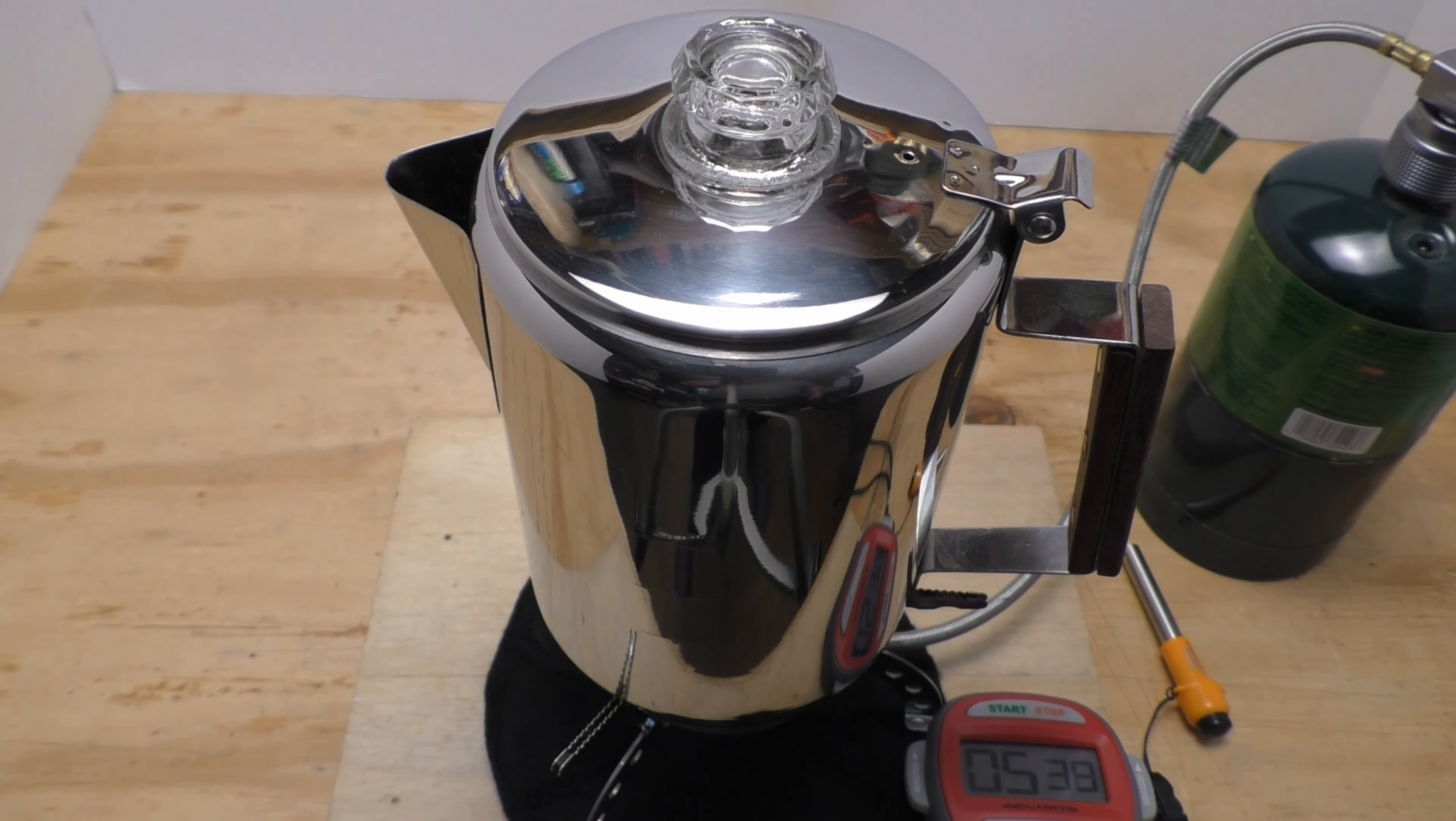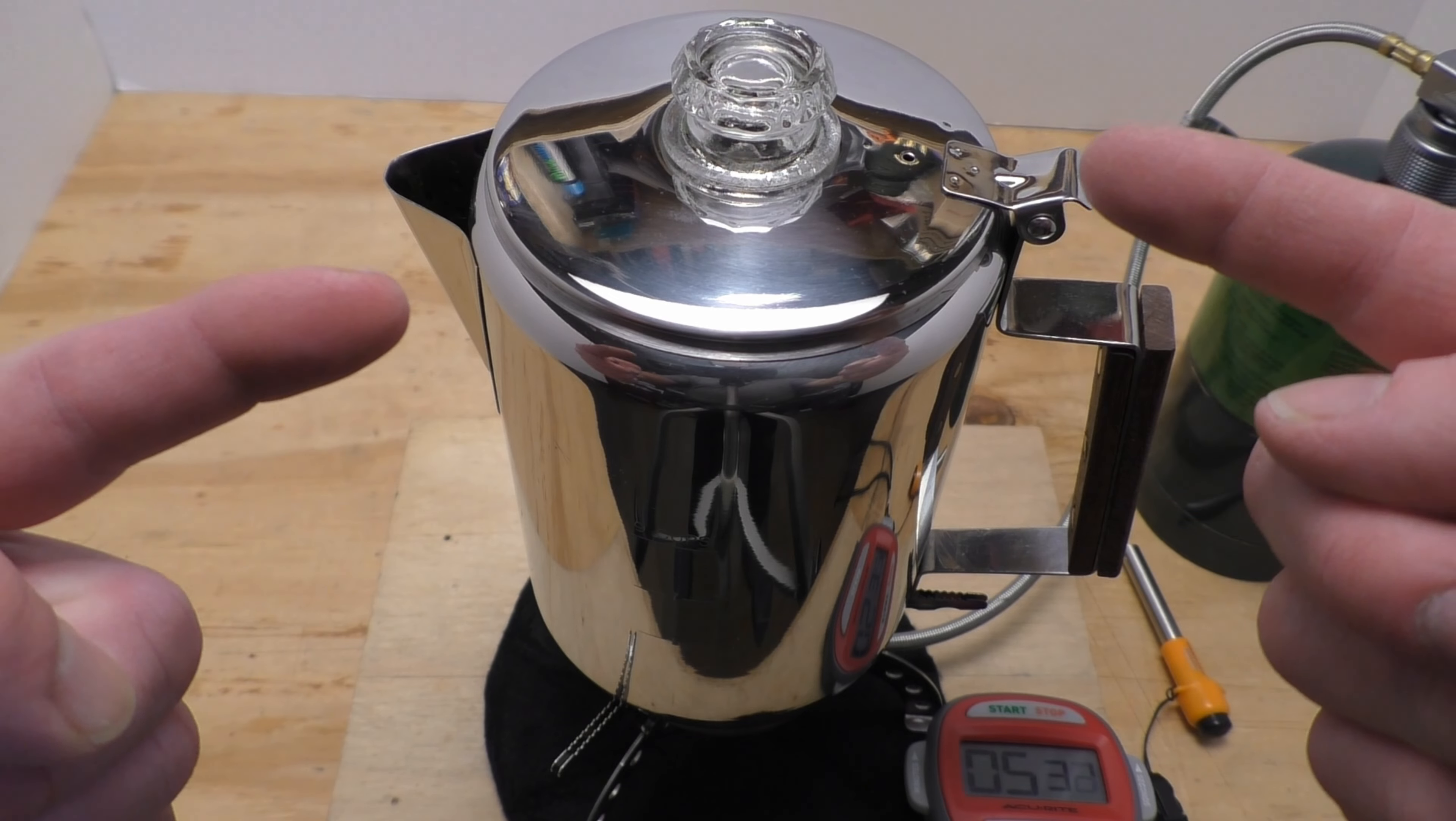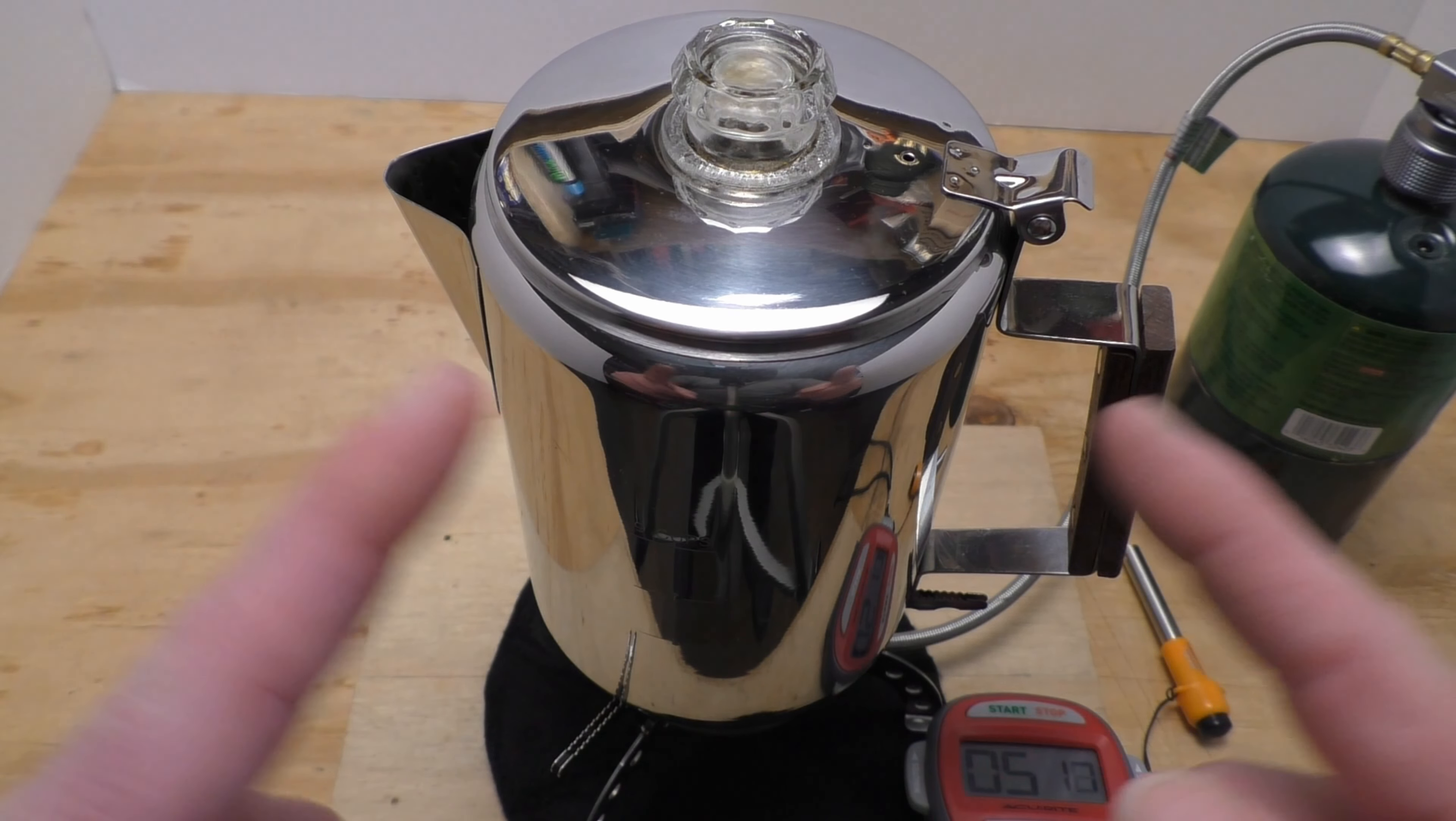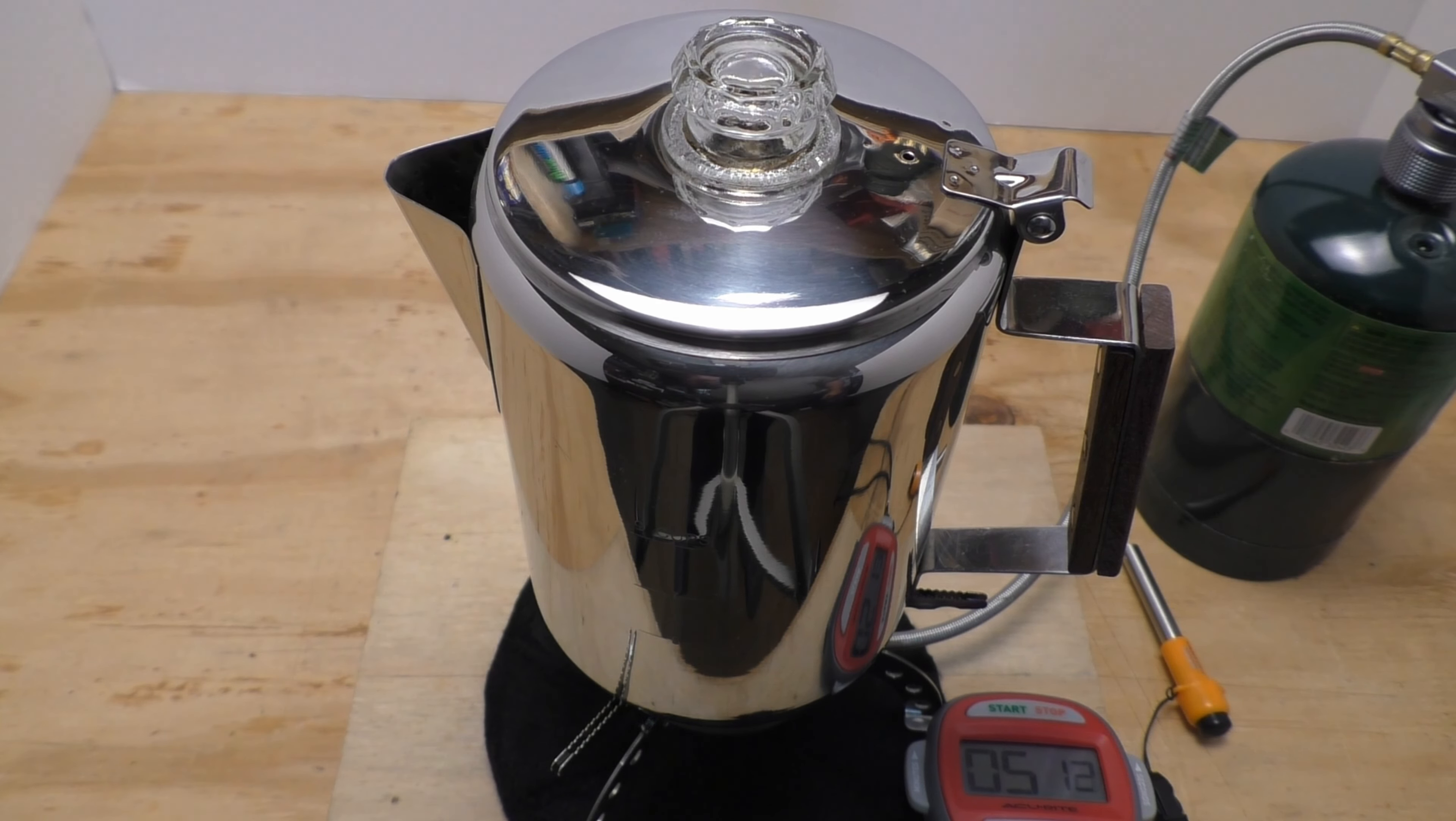Now another thing you can do if you don't have a timer or a wristwatch is you can just observe the color of the water. Because as this perks up and goes down through the grains, the water is going to change color and you're going to see that nice rich coffee color. It's already starting to turn color. As you can see, the water is constantly recycled through the grounds. That's why with a percolator you're going to get very rich coffee. In fact, I can smell it already, woo, smelling good.